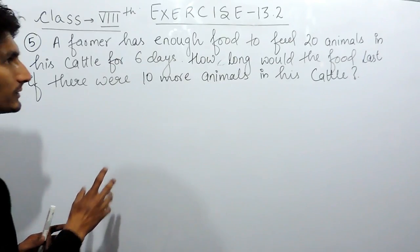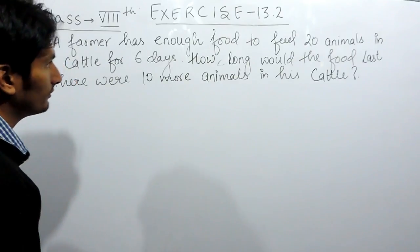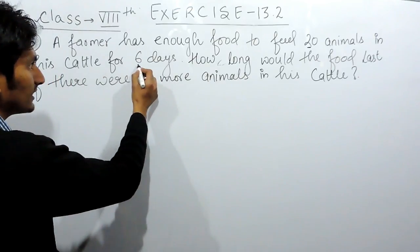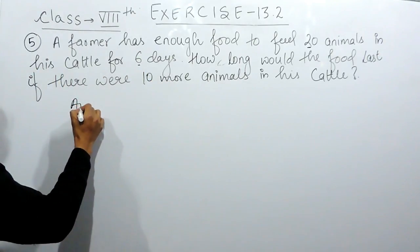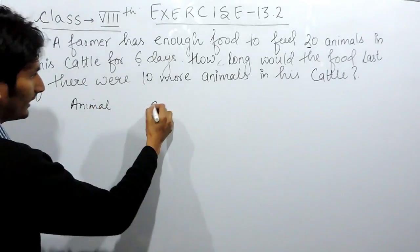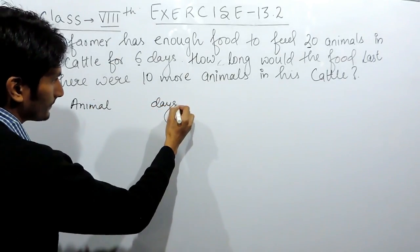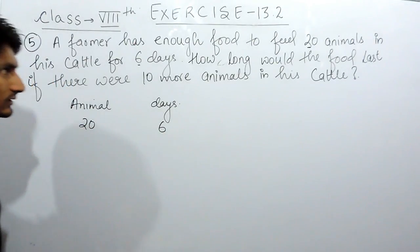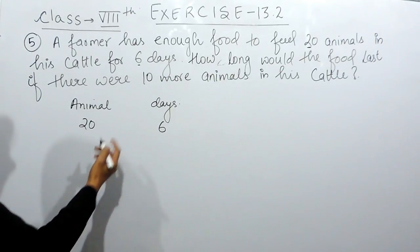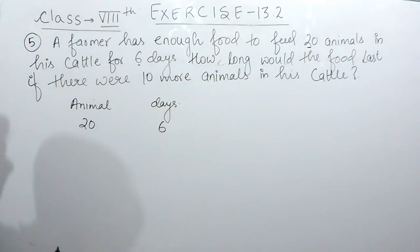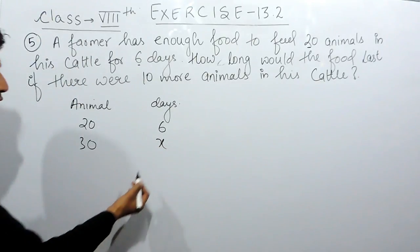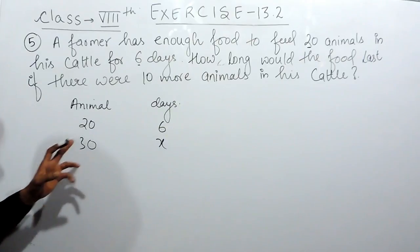There are two parameters in this question: first is the number of animals, and second is the number of days. When there were 20 animals, the food was lasting six days. It is given that when 10 more animals came to his cattle, the number of animals are now 30. You have to find how many days the food will last.